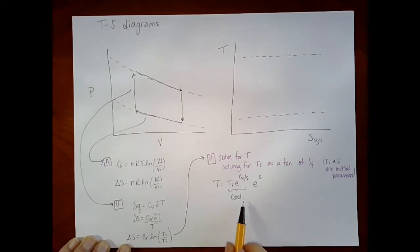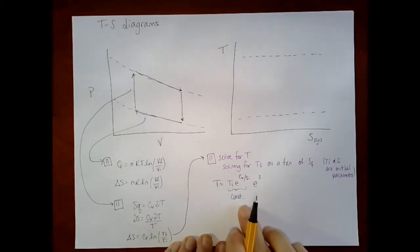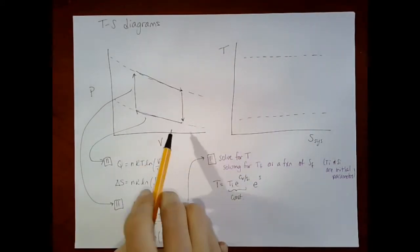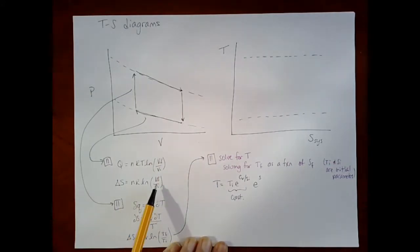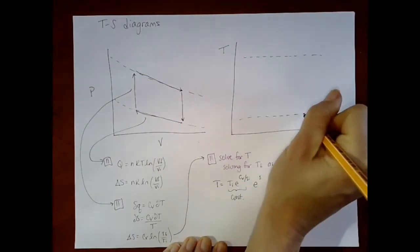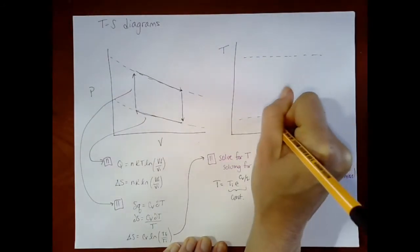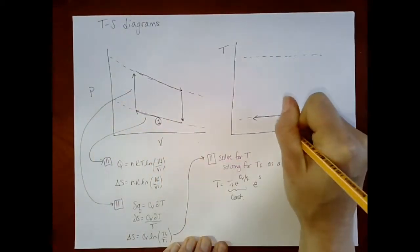So now if I plot these processes, I've got some isothermal cooling where my entropy, which Vf is now smaller than Vi, so this is negative. So if I start here, then I've got an isothermal step where I'm decreasing entropy. So if this is process one, here's process one.